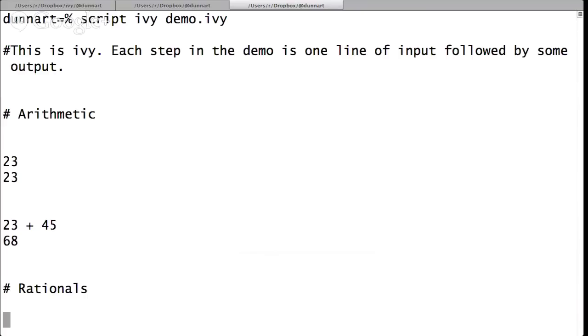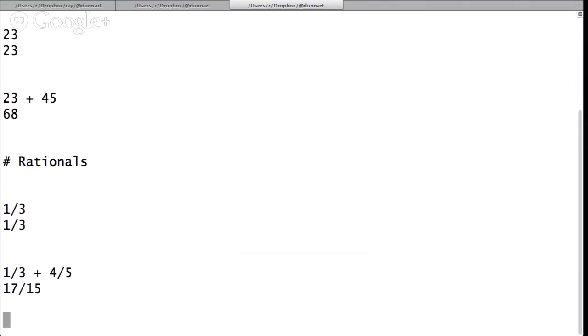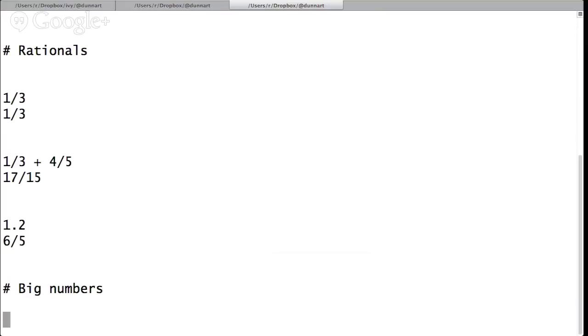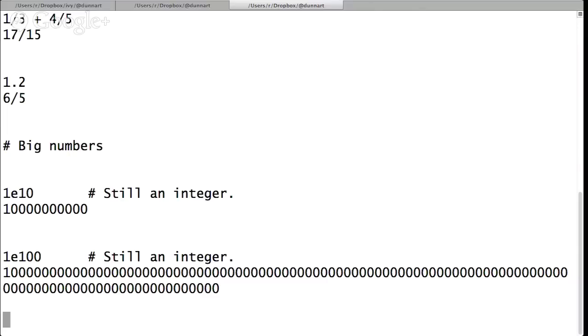So 23, you can add two numbers, right? It actually takes rationals, which APL didn't, because it was a floating-point machine as well. You can add rationals. If you input a floating-point number, it actually comes out as a rational, because this is all exact arithmetic now.